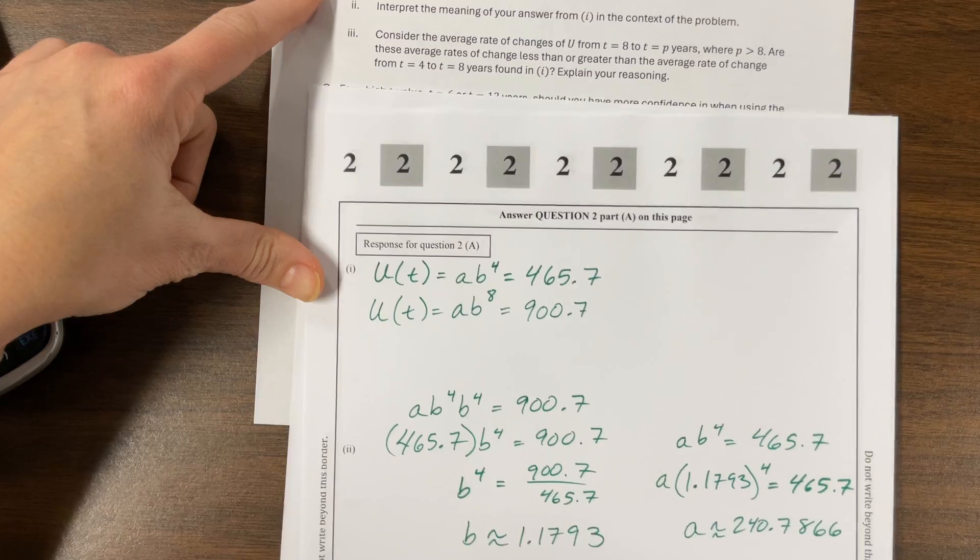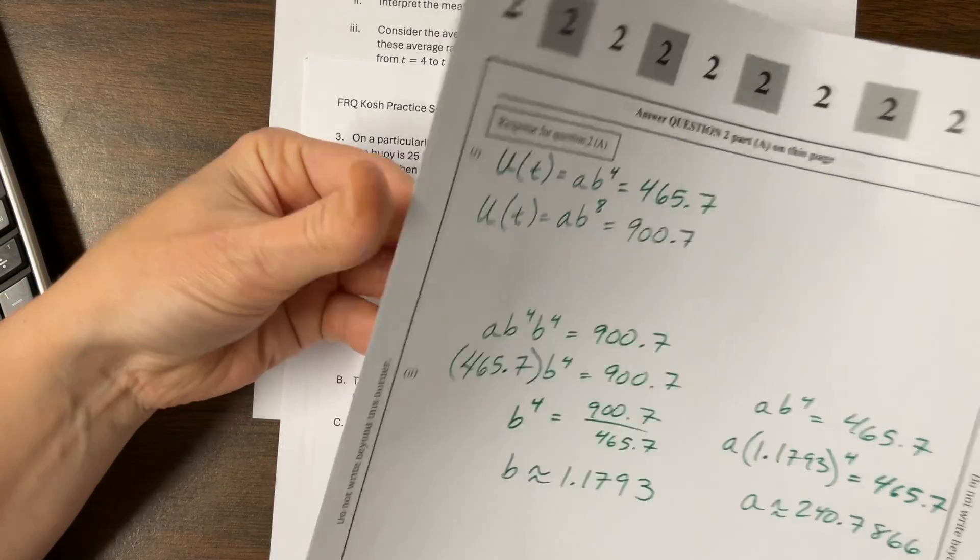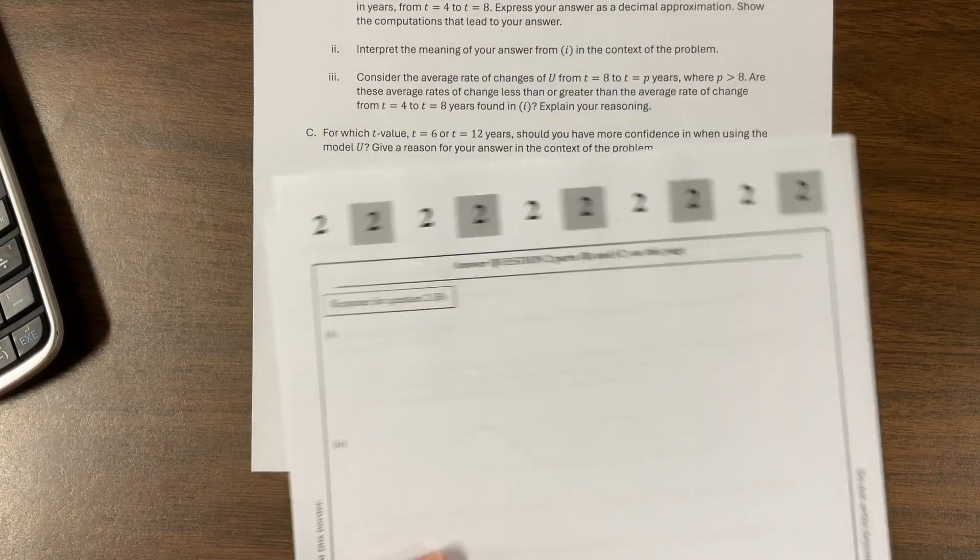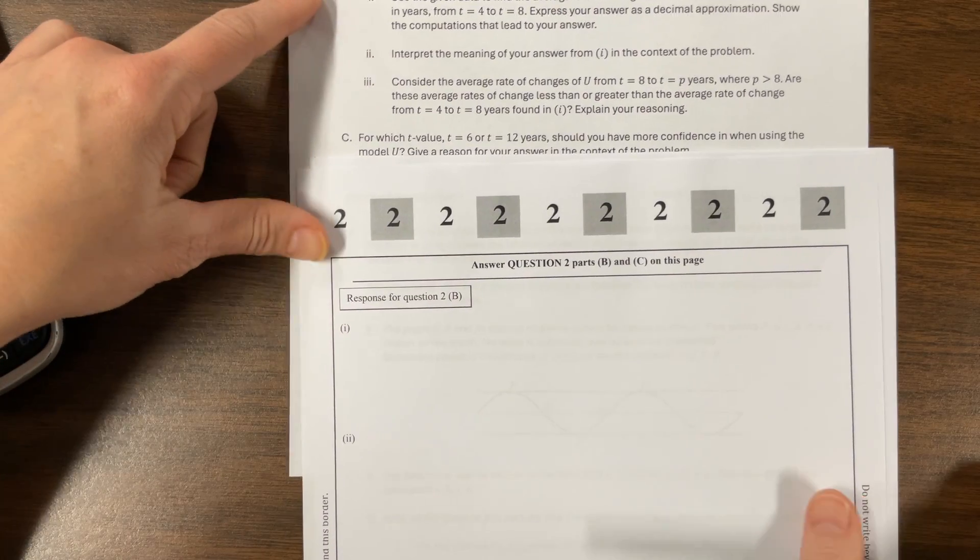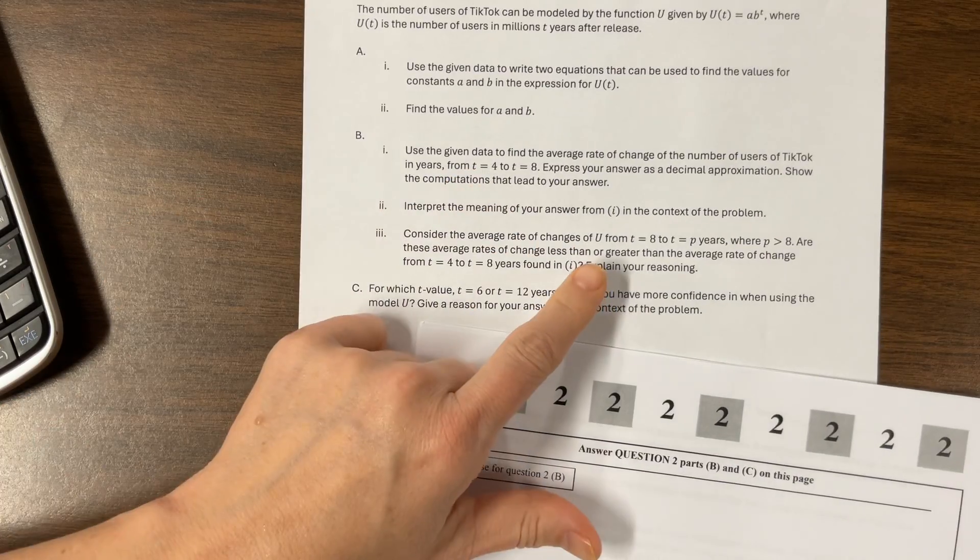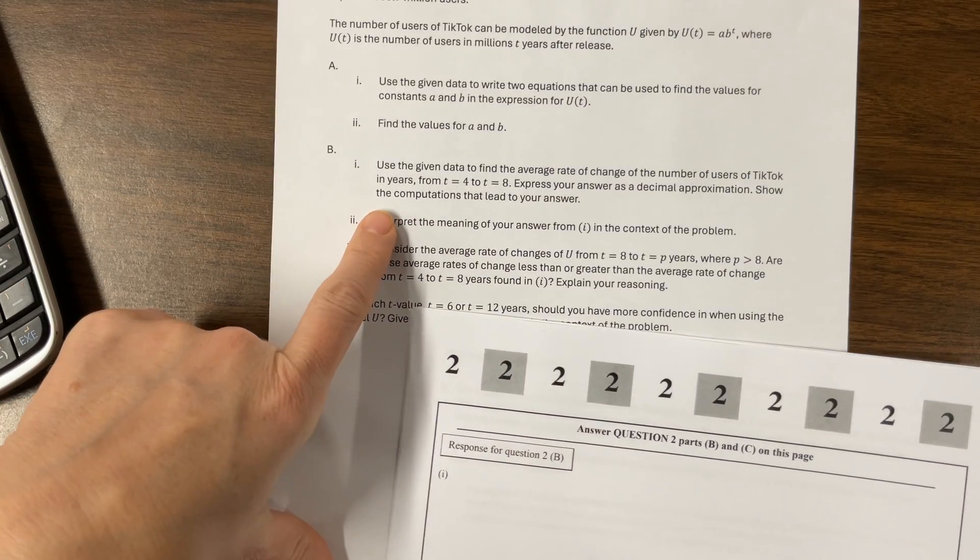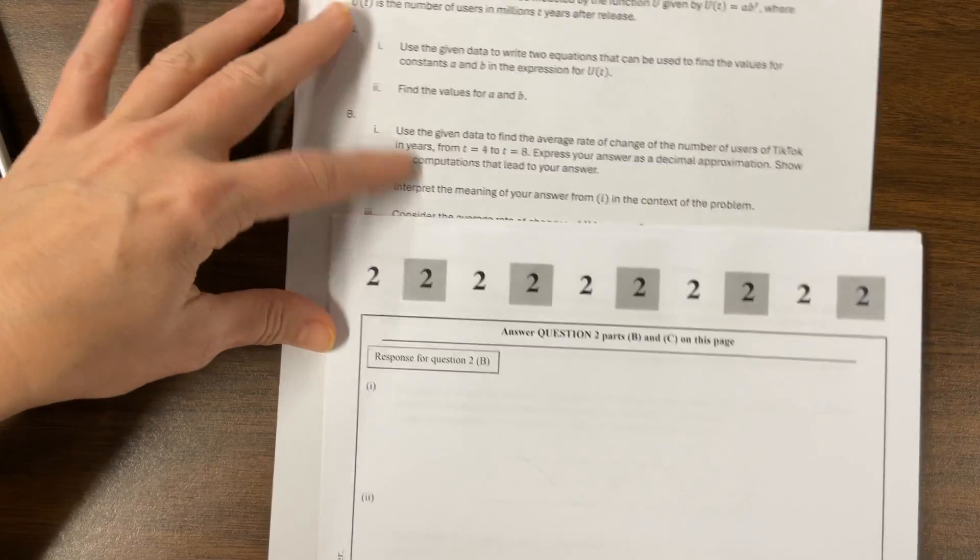Then it says, use for part B. I think we're on to the next page of our answer document. Use the given data to find the average rate of change for the number of users from T equals four to eight. Express your answer as a decimal approximation. Show the computations that lead to your answer.